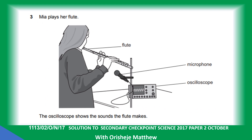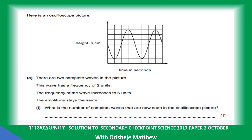Question 3. A flute is played. The oscilloscope shows the sound the flute makes. Here is an oscilloscope picture. There are two complete waves in this picture. These waves have a frequency of two units. The frequency of the wave increases to six units, and the amplitude stays the same.